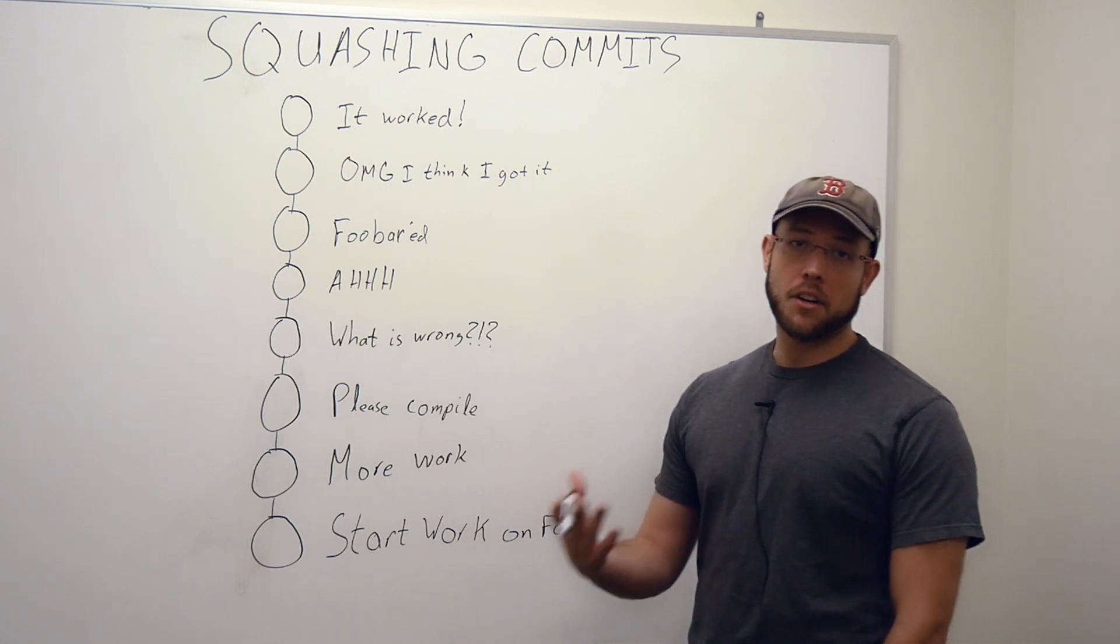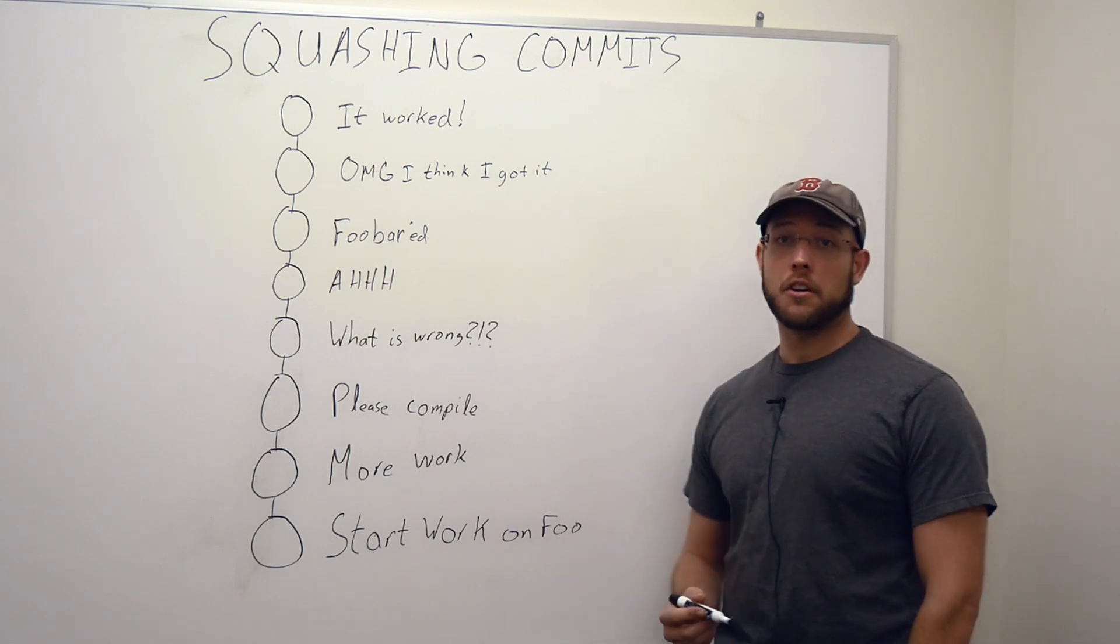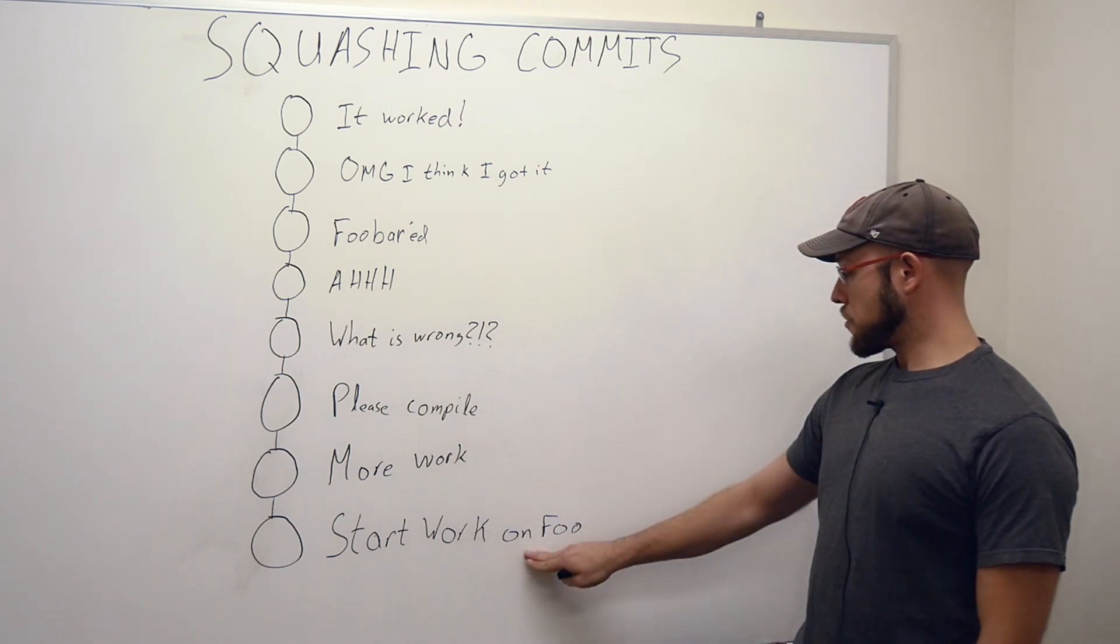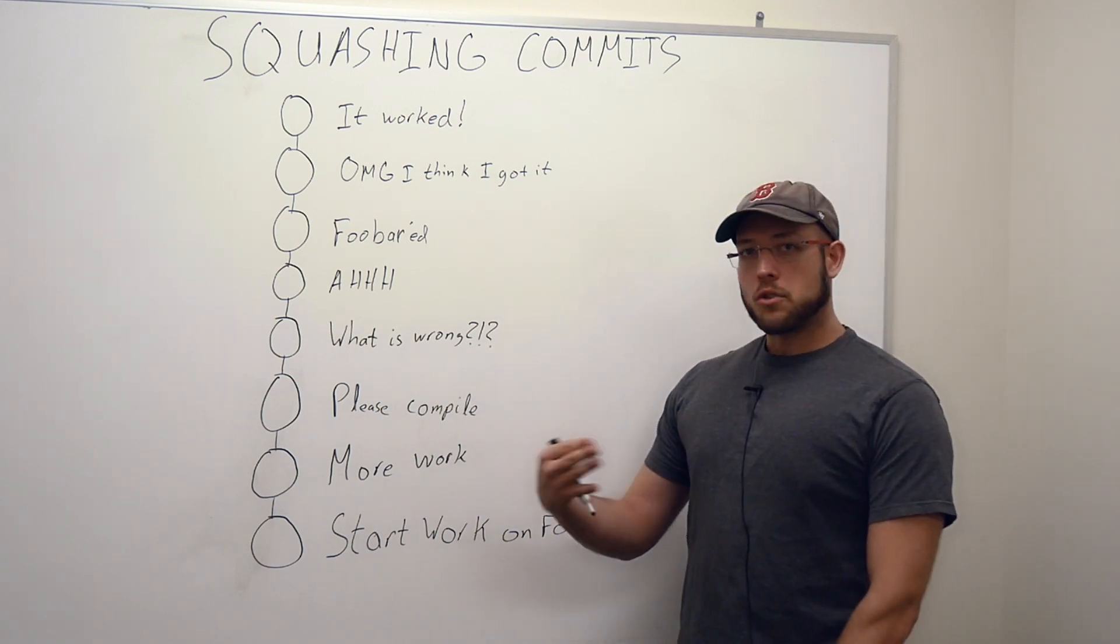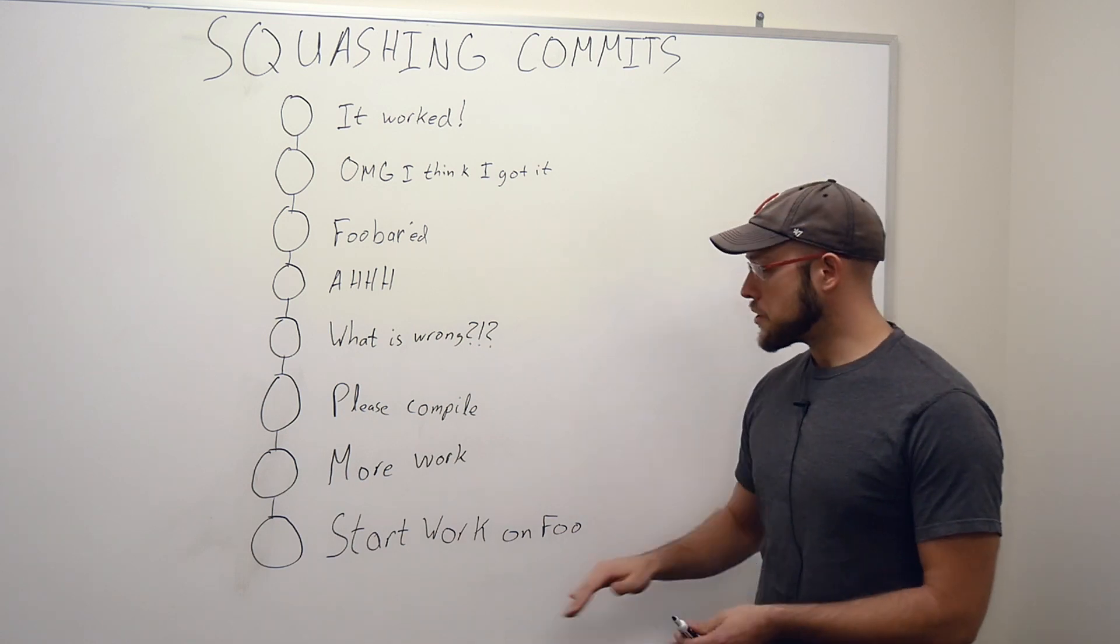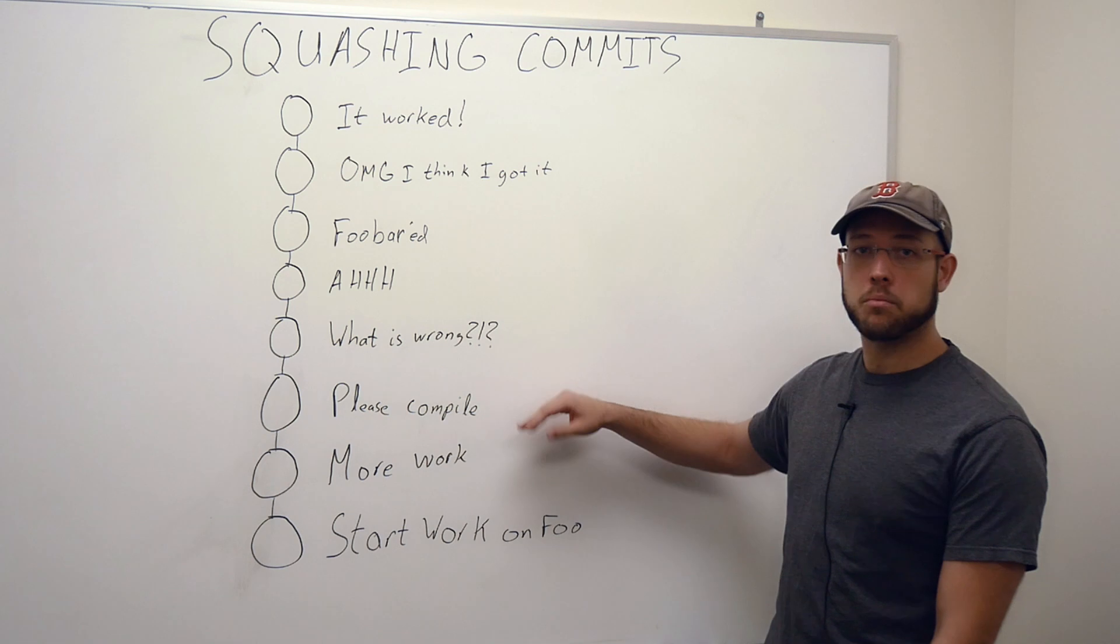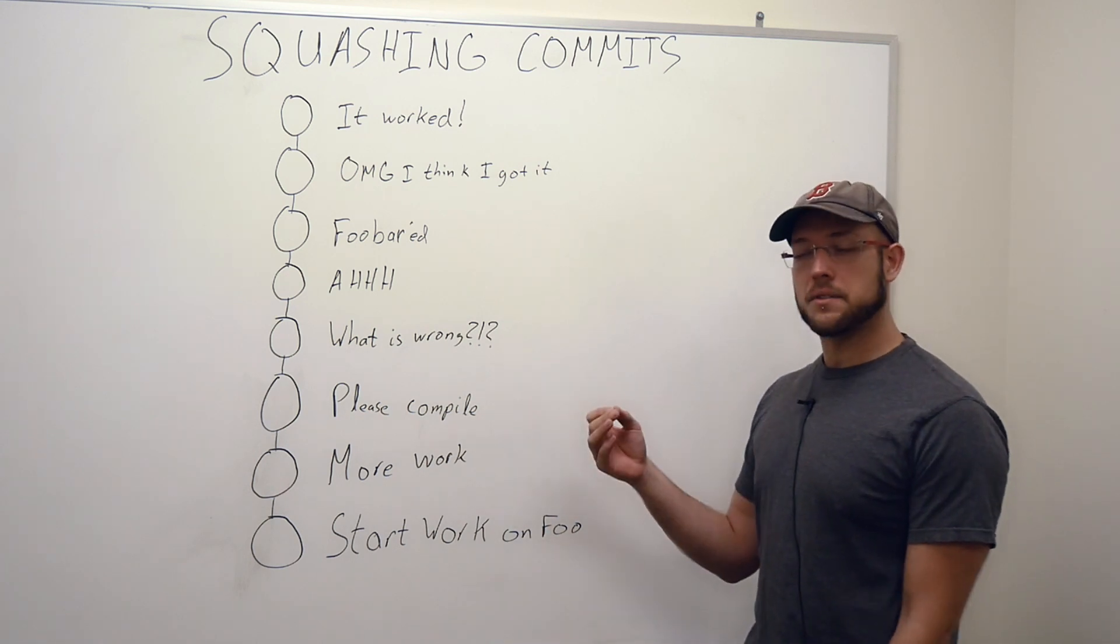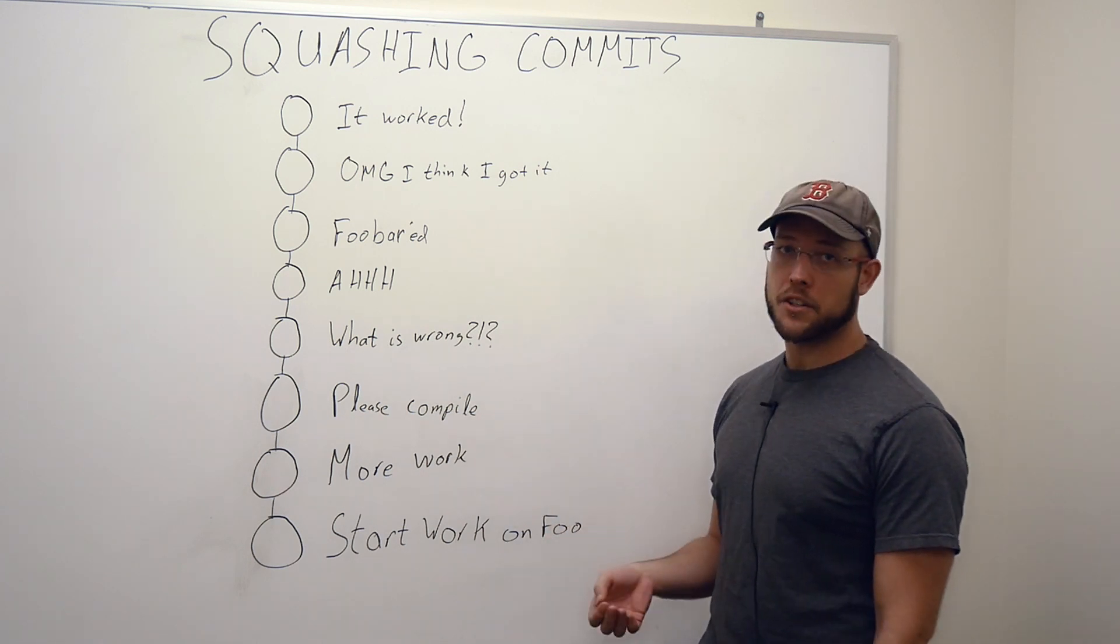So say you're working on a feature and you've been working on it for a while, we're going to call this feature foo. We're just kind of progressing through things and we're trying to figure out how to make this work and we're running into some issues, but we want to make commits at each point to kind of give ourselves a snapshot on what we're trying to do and where we're going.